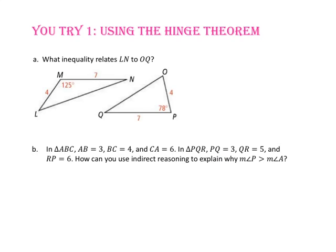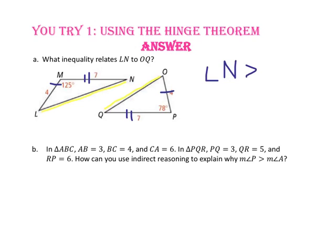Pause the video and do U-try number one. What inequality relates the length of side LN to the length of side OQ? Since the length of segment ML is 4 and the length of segment PO is 4, we know that these two sides are congruent. Since the length of segment MN is 7 and the length of segment PQ is 7, we know that these two sides are congruent. The measure of angle M is 125 and the measure of angle P is 78. Since the measure of angle M is greater than the measure of angle P, we know the side opposite angle M, side LN, must have a greater length than the side opposite angle P, side OQ.